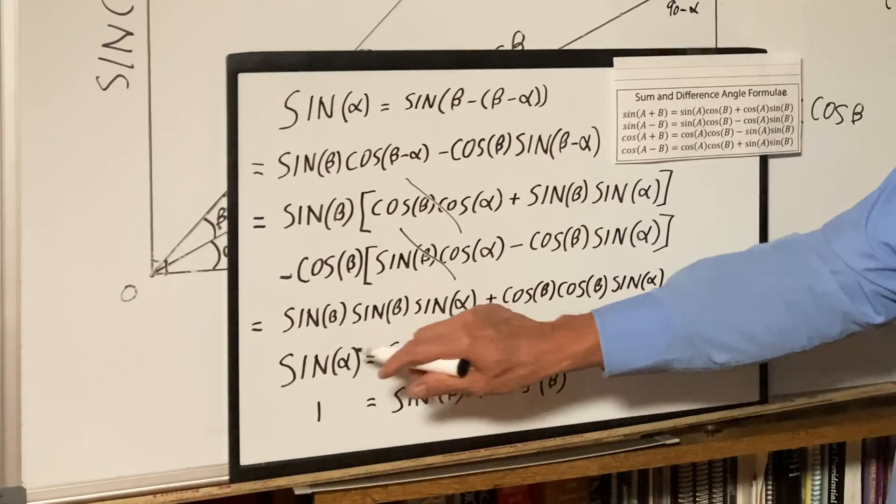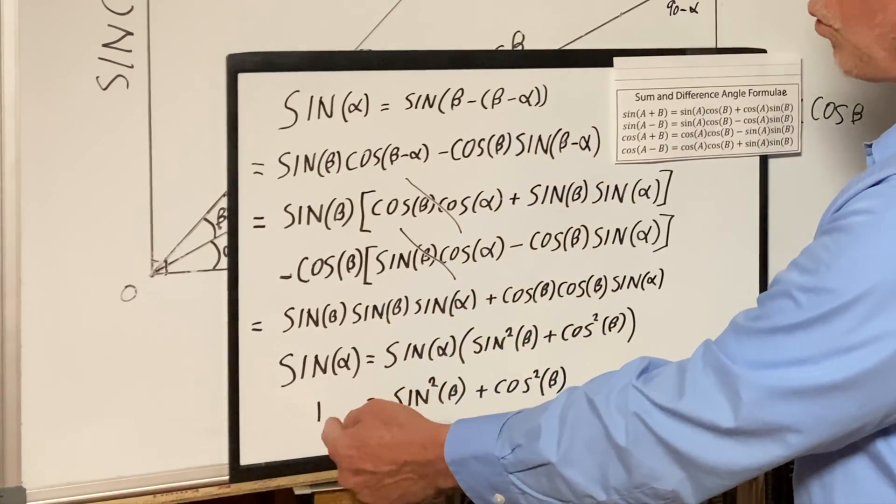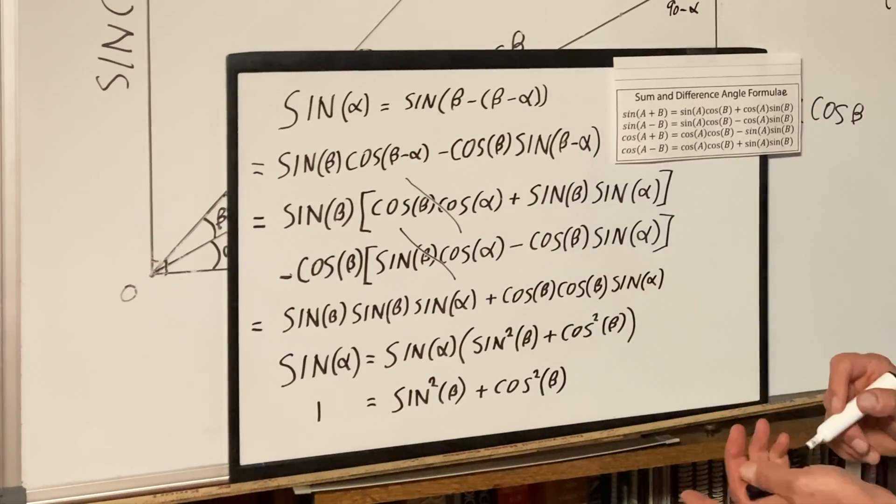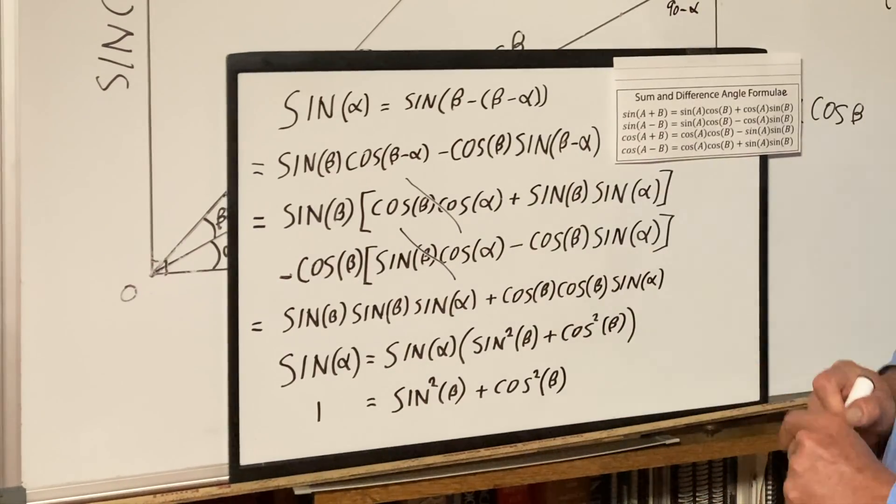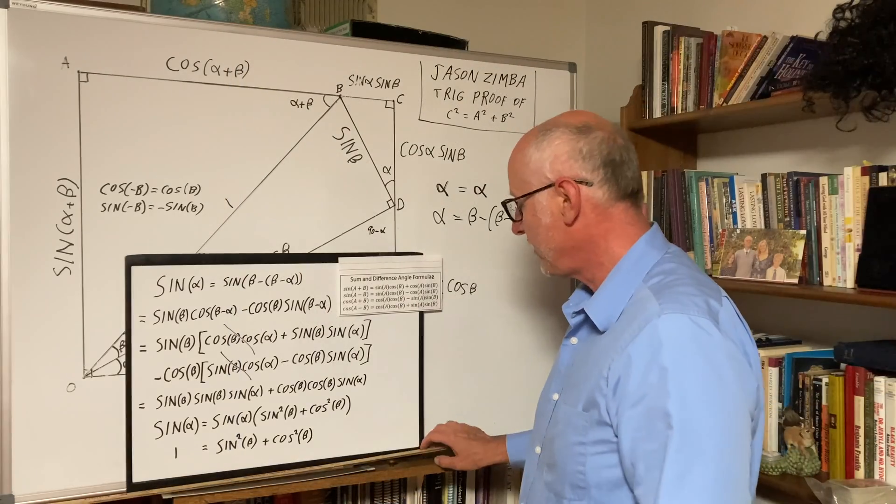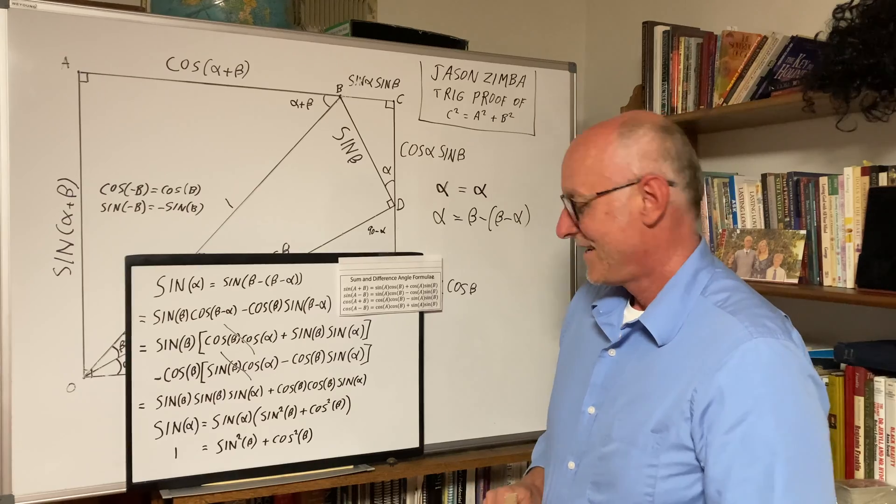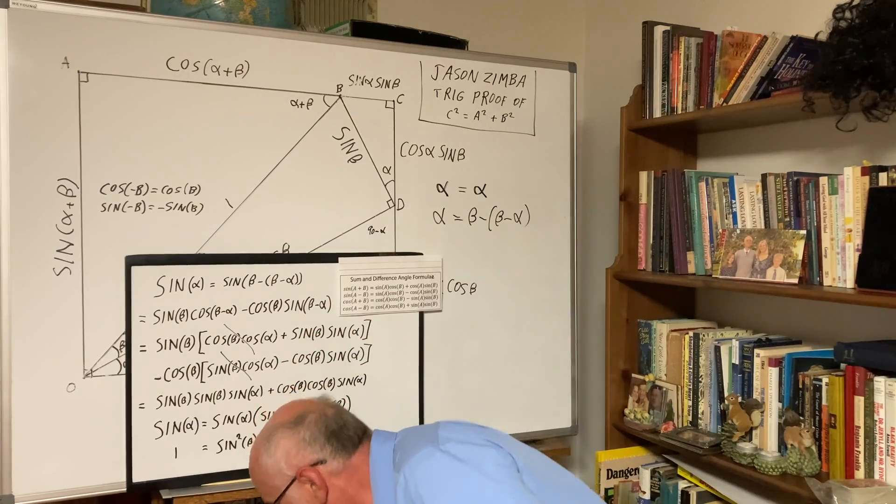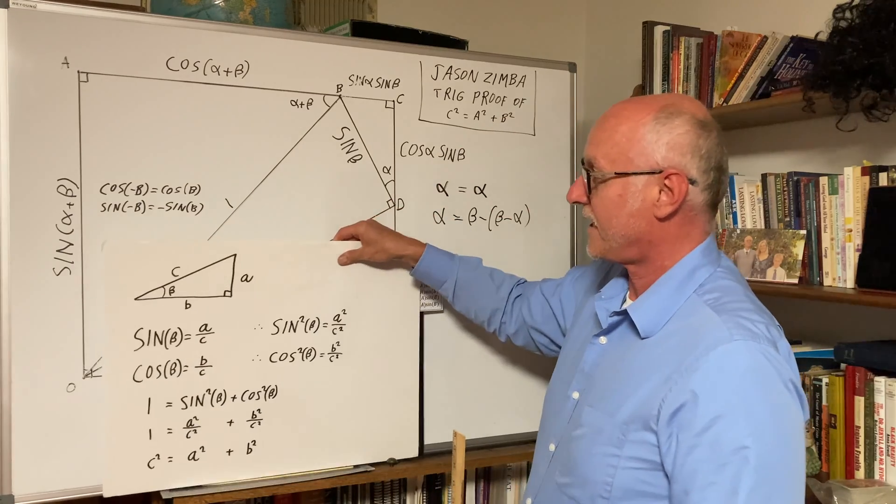Well, the sine alpha cancels out to a one, equals sine squared beta plus cosine squared beta, and that's called a Pythagorean trig identity. And you might say, well, it doesn't look like c squared equals a squared plus b squared, but let me show you that it is.